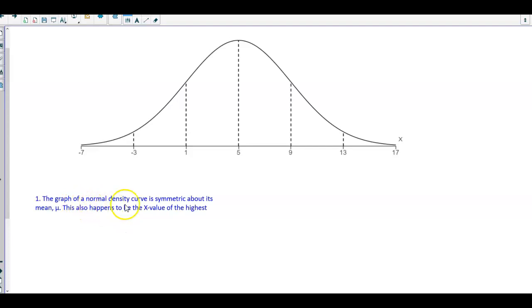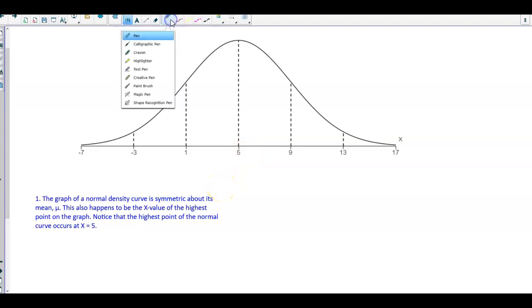The graph of a normal density curve is symmetric about its mean μ. This also happens to be the x-value of the highest point on the graph. Notice that the highest point on the graph here at the top occurs when x is equal to 5. We can see that the highest point in the graph corresponds to the value of 5.